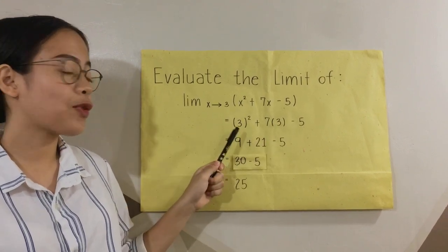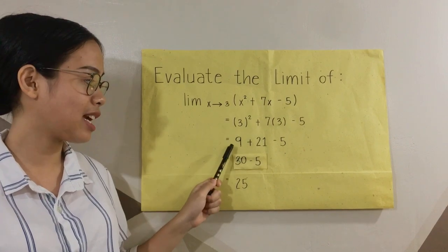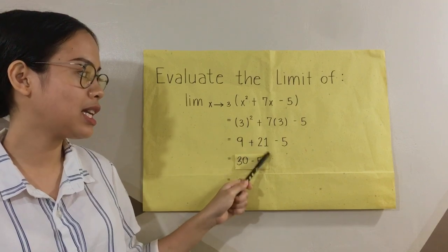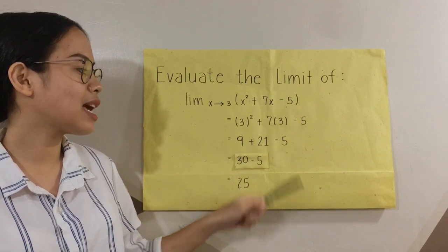3 raised to the power of 2 is 9 plus 7 multiplied by 3 is 21 minus 5.